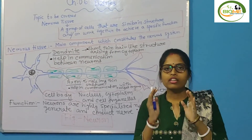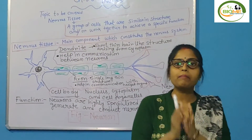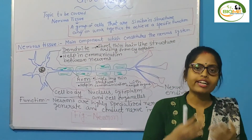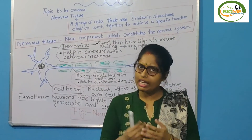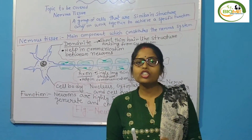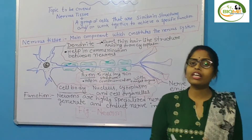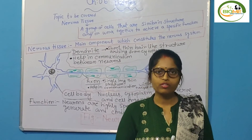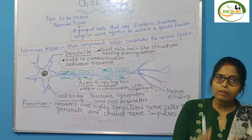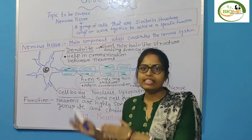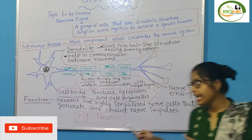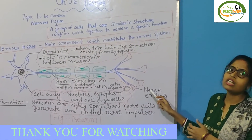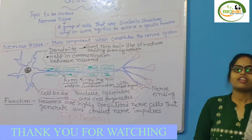Recapitulation: nervous tissue is the main component of your nervous system, found in the brain, spinal cord, etc. The structural and functional unit of the nervous tissue and nervous system is your neuron. Neuron consists of three parts — cell body, dendrites, and axon. The end of the axon is known as your nerve ending or axon terminal. Thank you.